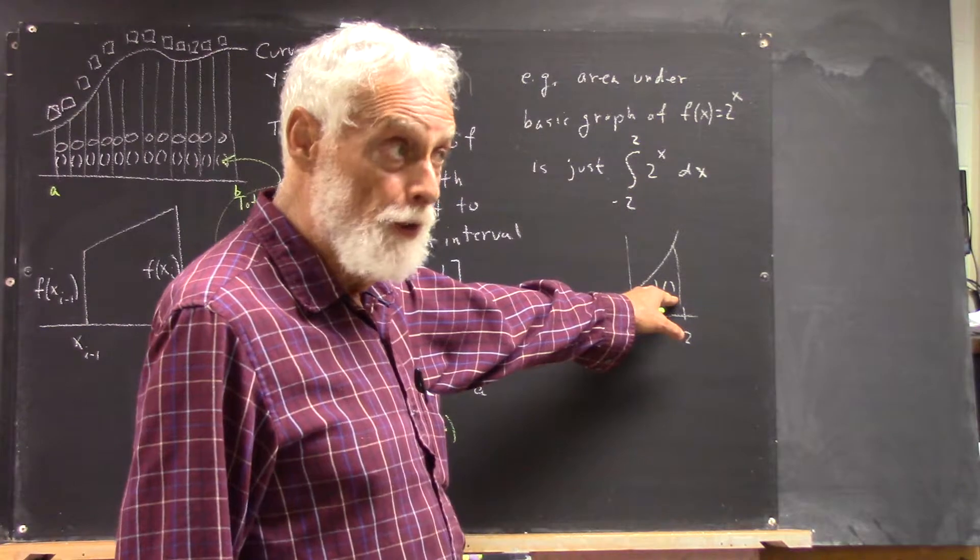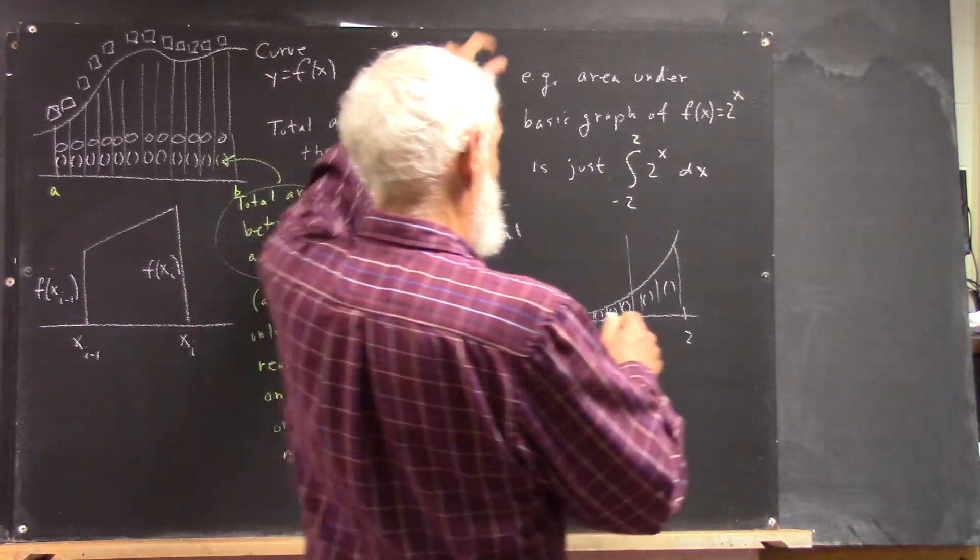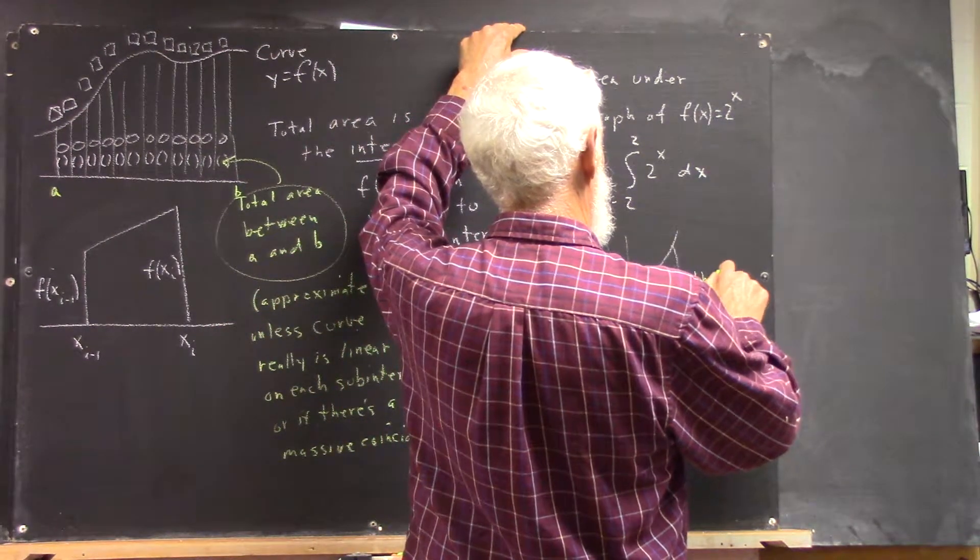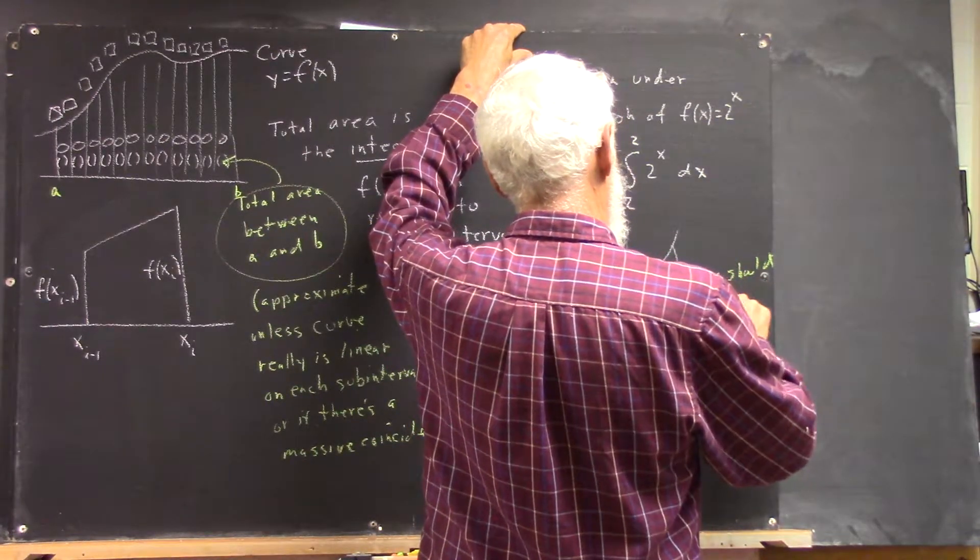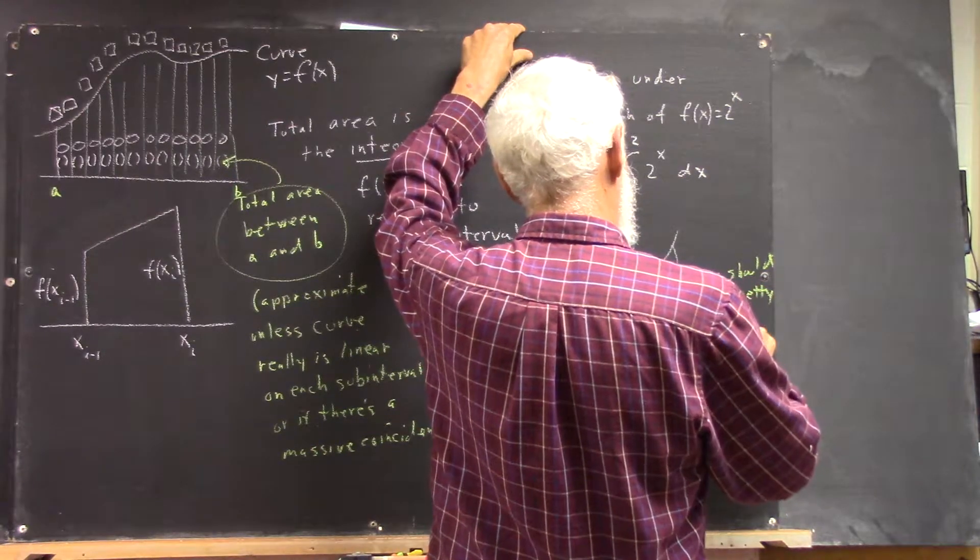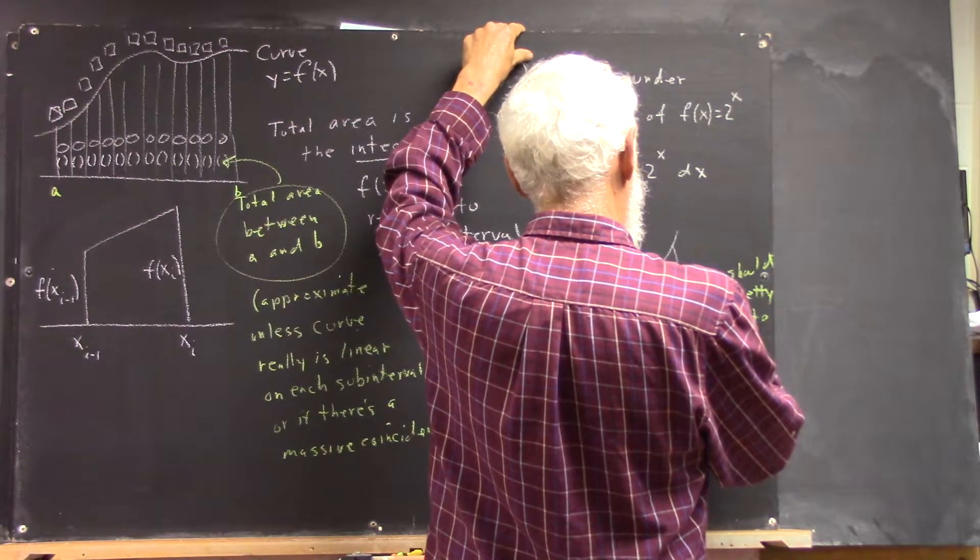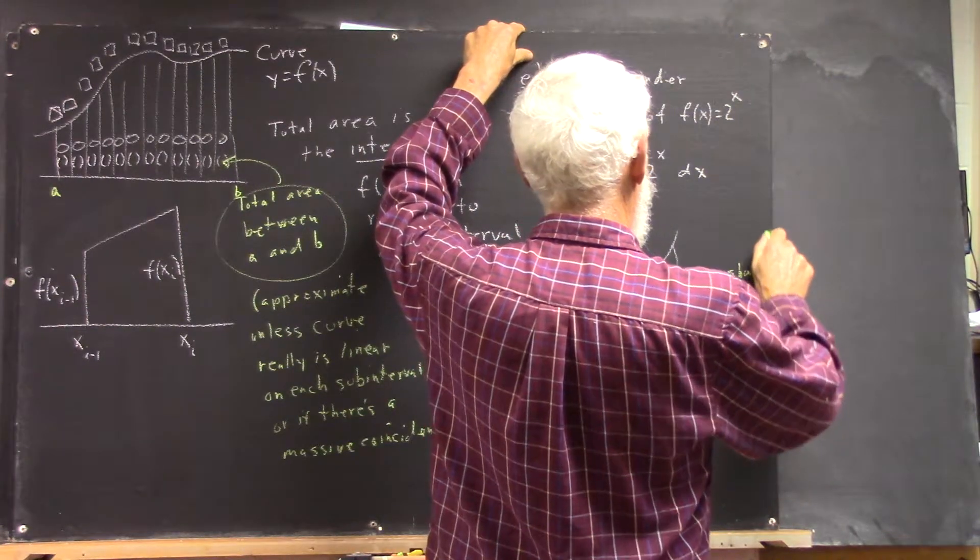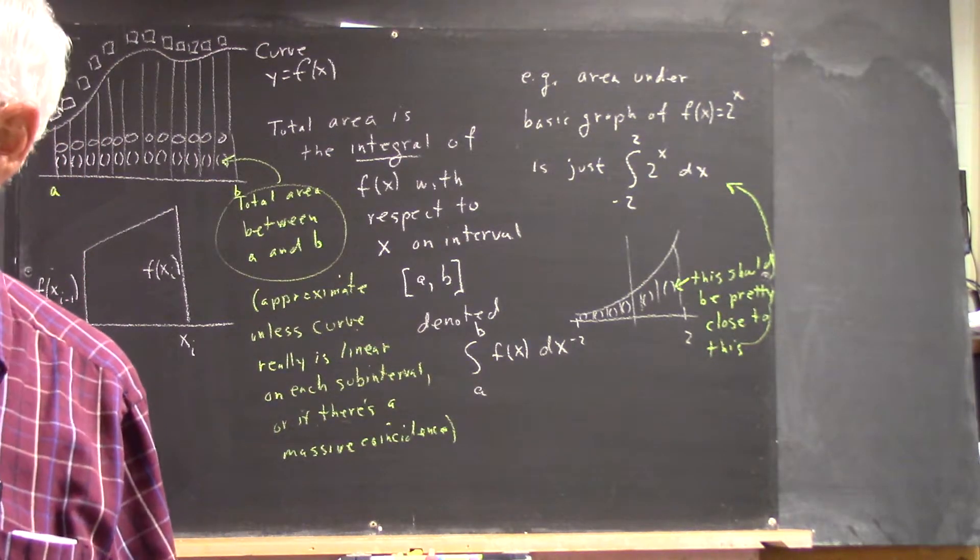It's going to be pretty close to this if you use a lot of intervals. So this should be pretty close to what Wolfram Alpha tells you here.